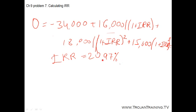Since the internal rate of return is greater than the required return, in this case we would accept the project. The required return is 16%, so we accept each project where the internal rate of return is greater than 16%.